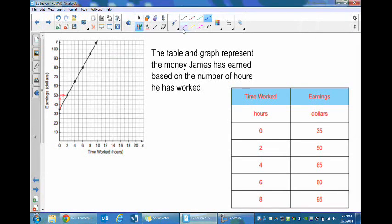Here we have a table and graph displaying the same information. The table and graph represent the money James has earned based on the number of hours he has worked. The amount he has earned is the y-axis and the time he has worked is the x-axis, same as the table where time worked is x and the amount earned is y.